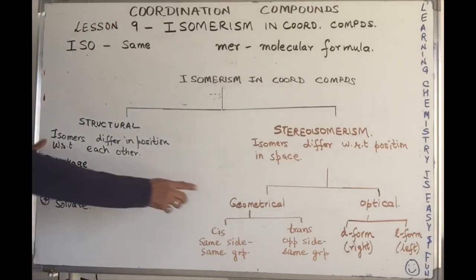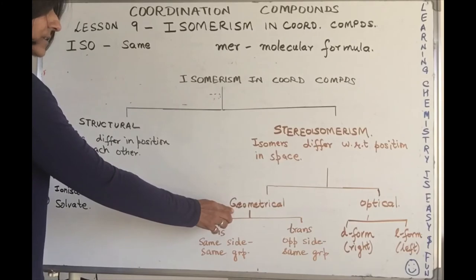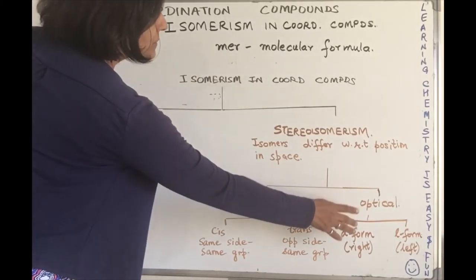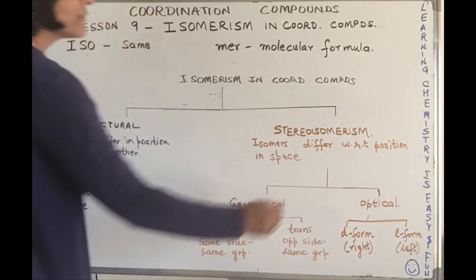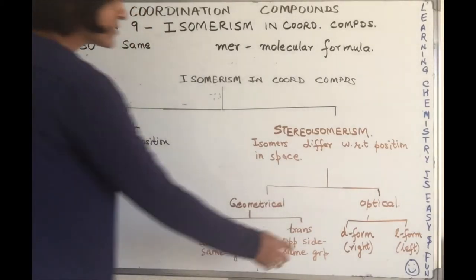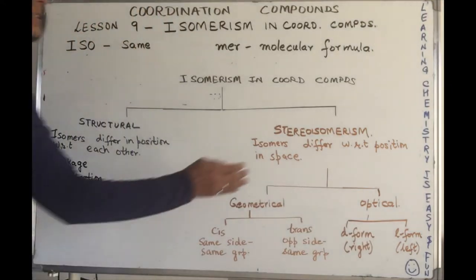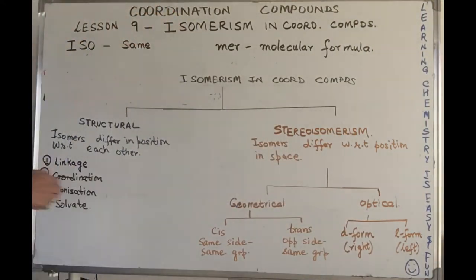Geometrical isomers are of two types: cis and trans isomers. That is why this is also called cis-trans isomerism. Optical isomers are two types: the d-form and the l-form, the dextrorotatory and the levorotatory. This is based on their effect on plane polarized light.